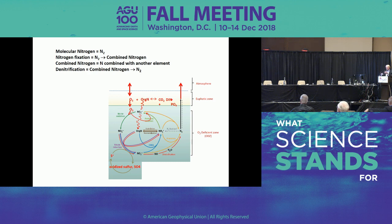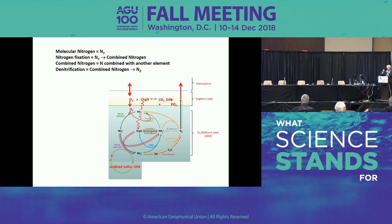Those compounds spin around in the nitrogen cycle, but at some point they spin out into an oxygen deficient zone — where oxygen is so low it doesn't support aerobic decomposition of organic matter. So you have to have some sort of non-aerobic decomposition. One of those processes is denitrification.